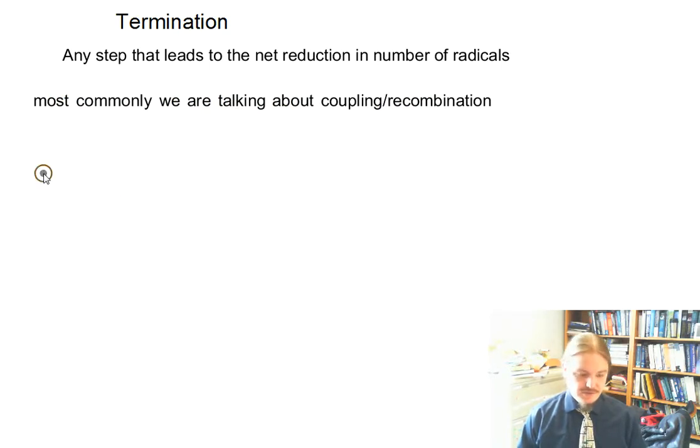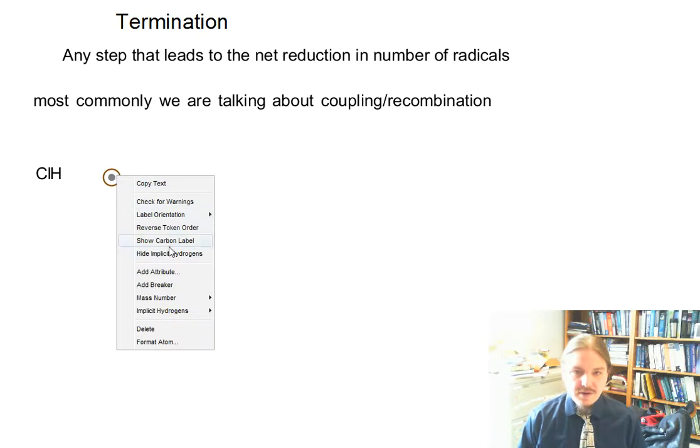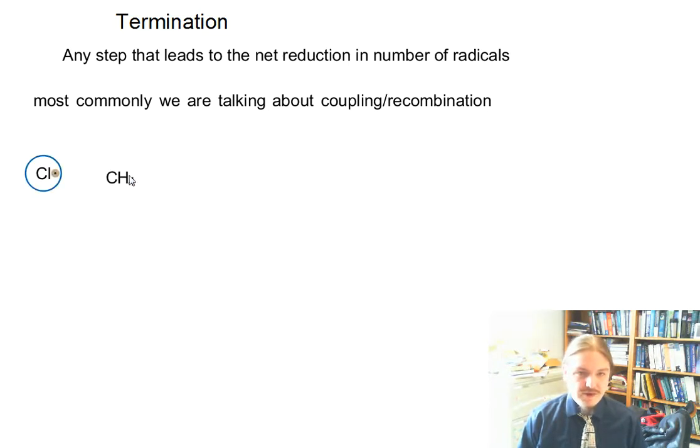For example, in some kind of reaction, we have a chlorine radical and a methyl radical. If these two things bump into each other and form a new sigma bond as part of a reaction, this can be a termination step.